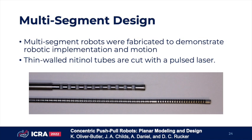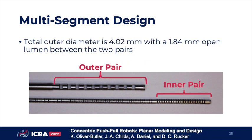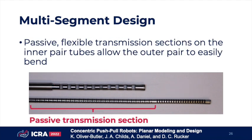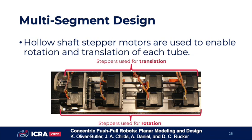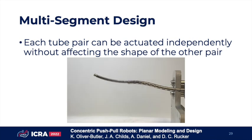The push-pull robot design can also be used to create multi-segment robots, which we demonstrate for a dual push-pull pair. The overall tube diameter is 4.02 millimeters and has a 1.84 millimeter inner lumen between the pairs. A passive flexible transmission section on the inner tube pair allows the outer tube to bend independently from the shape of the other pair. With our two tube pairs, we have a 5DOF robot, with each able to independently bend and rotate axially, and we are able to translate the whole robot. For our actuation, hollow shaft stepper motors are used to enable rotation and translation of each tube. Each tube pair can be actuated independently without affecting the shape of the other pair, achieved by the flexible transmission section on the inner tube pair.